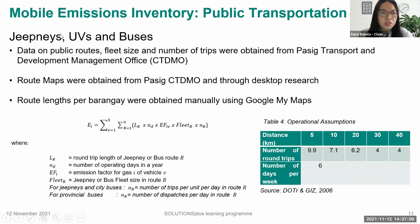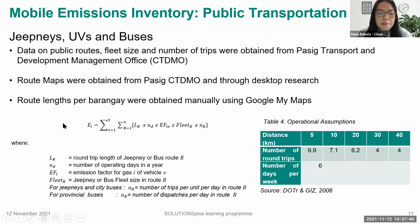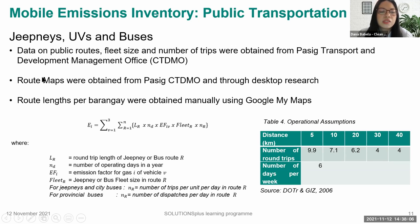For public transportation — specifically jeepneys, UV Express, and buses — data were obtained from relevant PASIC city departments such as City DMO, and used to calculate VKT per route and per barangay. Total VKT per barangay was obtained by manually measuring route lengths per barangay using Google My Maps. Each jeepney, UV Express, or bus route map was plotted and the route length per barangay was manually measured to estimate activity data for each vehicle type in each road in a barangay.